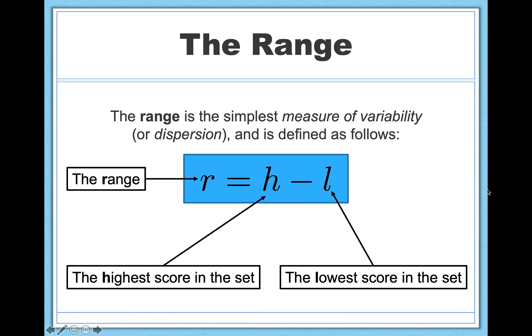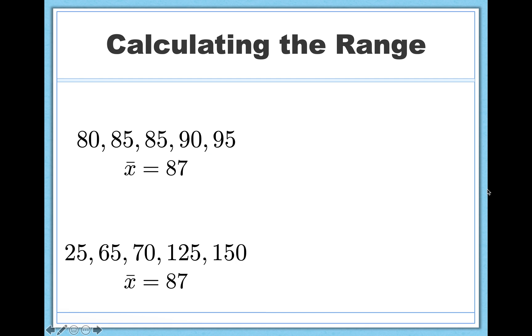So you can see that this is a very simple calculation. And if we go back to the example we were working with a minute ago, we can calculate the range very quickly. So for the first data set, we have 95 minus 80, so the range is 15. And in the second data set, we have 150 minus 25, giving us a much larger range of 125.